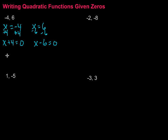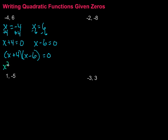Those two expressions are going to be multiplied by each other: x plus 4 times x minus 6 equals 0. Then I'll FOIL these two together to get a quadratic equation. First terms: x squared. Outer terms: negative 6x. Inner terms: 4x. Combining those gives minus 2x. Last terms: 4 times negative 6 is minus 24. To make it a function, I set that equal to f of x.